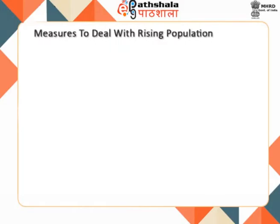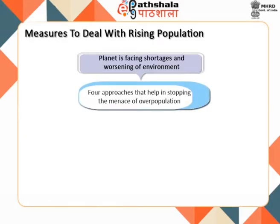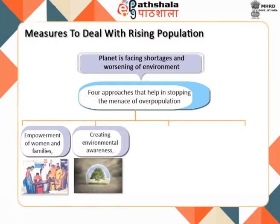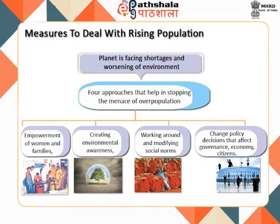Nearly at 7.2 billion, this planet is facing shortages and worsening of the environment. Population in developed countries is stabilized but is still growing at an unchecked pace in poorer countries. In the last century, scientists and researchers have been proven correct about the adverse impacts unchecked population growth can bring about. The four approaches that can help in addressing the menace of overpopulation include: empowerment of women and families, creating environmental awareness, working around and modifying social norms, and bringing all stakeholders together to change policy decisions that affect governance, economy, and citizens.